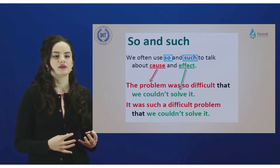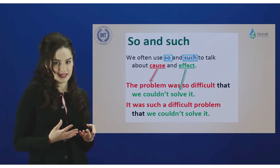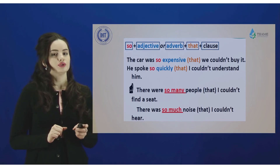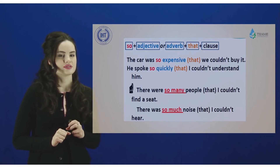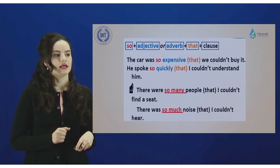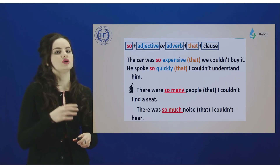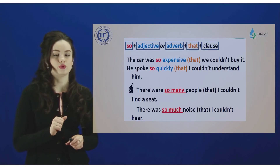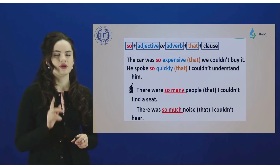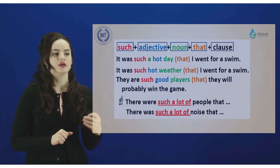Now let's move on to 'so' and 'such' — two words used in order to emphasize an adjective or the meaning of a sentence. How should they be used? You should use 'so' when you have the structure: so + adjective or adverb, depending on the situation, and possibly followed by 'that'. For example: 'so expensive', 'so quickly'. If there is no noun in the sentence and you simply want to emphasize an adjective, use the word 'so'.